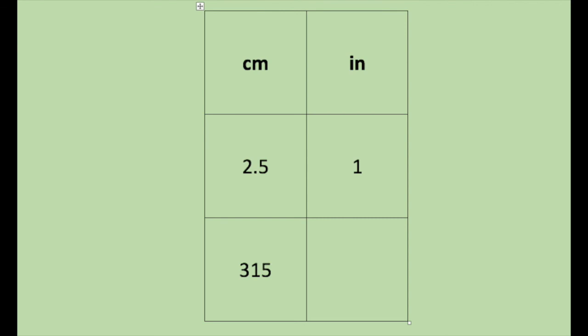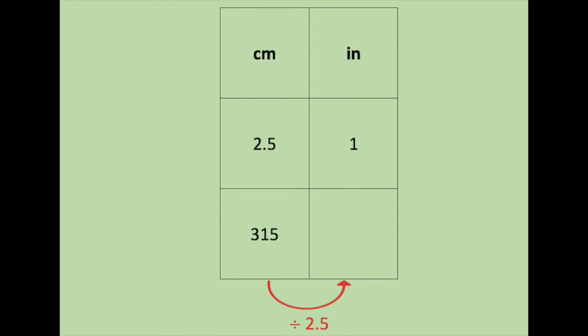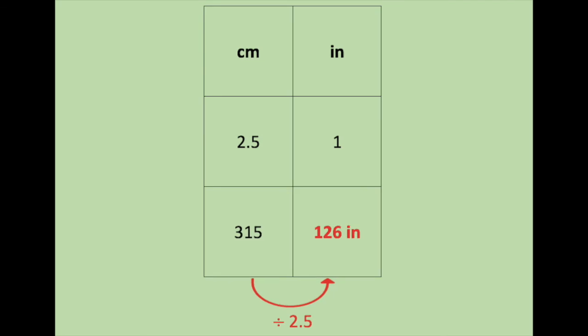Question 3: 315 centimeters is how many inches. Set up your ratio box. Centimeters, inch. Every inch is 2.5 centimeters. Under centimeters, 315. To go from 2.5 to 1, I have to divide by 2.5. So 315 divided by 2.5 will give us 126 inches.